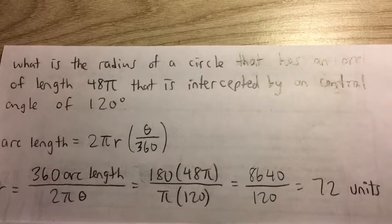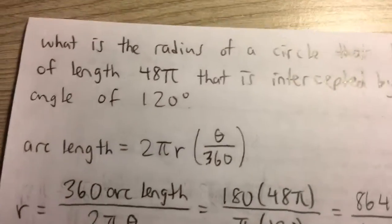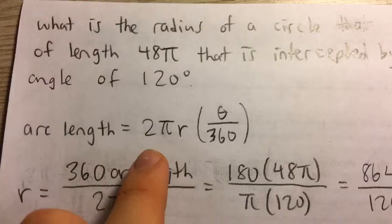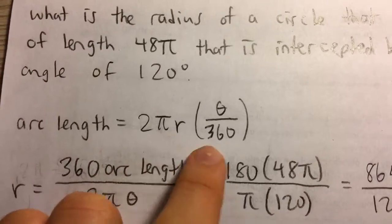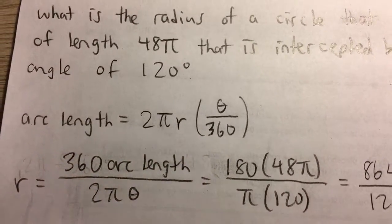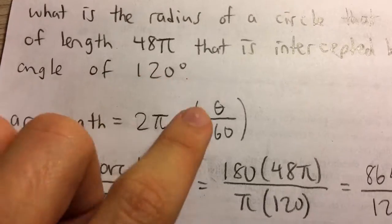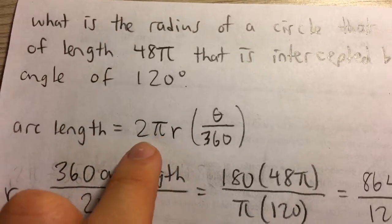Now first off, we have to know the arc length formula for degrees. You could use the one for degrees, but you could also use the one for radians, convert 120 to radians and then plug it in. But I'm just going to use the degree one.